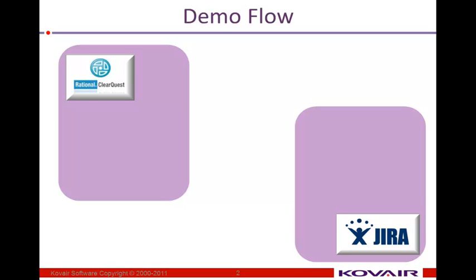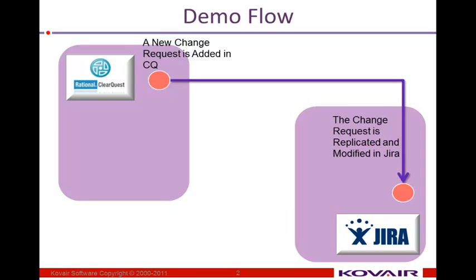The demonstration flow we'll be using in this video starts with ClearQuest, where we will create a new change request as if it is coming from the customer. Using Covair Omnibus, that particular change request will be replicated to Jira. In Jira, the developers will be looking at that particular change request, modify it, and change the status to reviewed, for example. And then they will implement that change request.